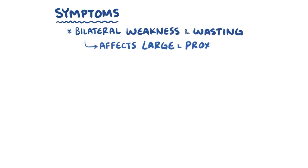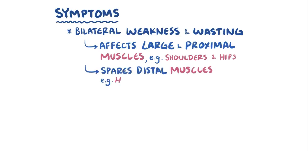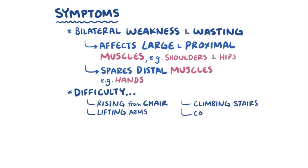Symptoms of polymyositis usually include bilateral weakness and muscle wasting that mostly affects proximal, big muscle groups, like the shoulders and hips, and usually spares the distal muscles like muscles in the hands. Individuals might have difficulty rising from a chair, lifting their arms, climbing stairs, or combing their hair. Sometimes these muscles might be tender or painful.